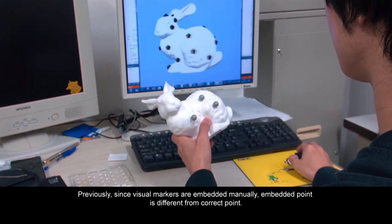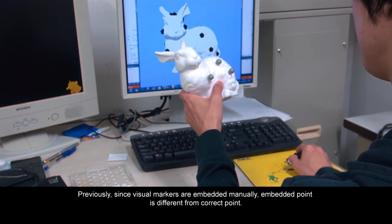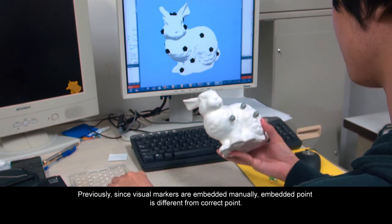Previously, since visual markers are embedded manually, the embedded point is different from the correct point.